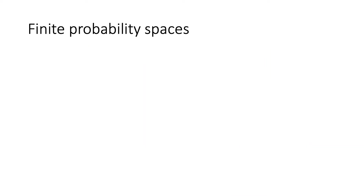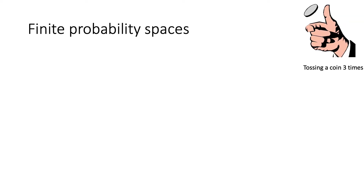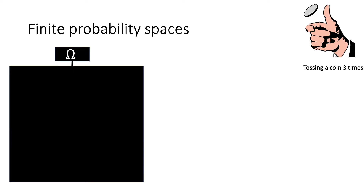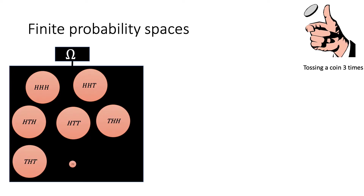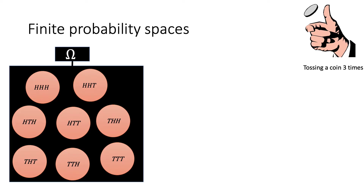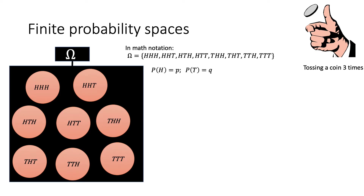Let's move to a concrete example to make things clearer. We run an experiment where we toss a coin three times. Let's list out the set of all possible outcomes — our universe. When we toss a coin three times we can get all heads, head-head-tail, head-tail-head, and so on, all the way down to tails-tails-tails. In mathematical notation this is just written as a set.